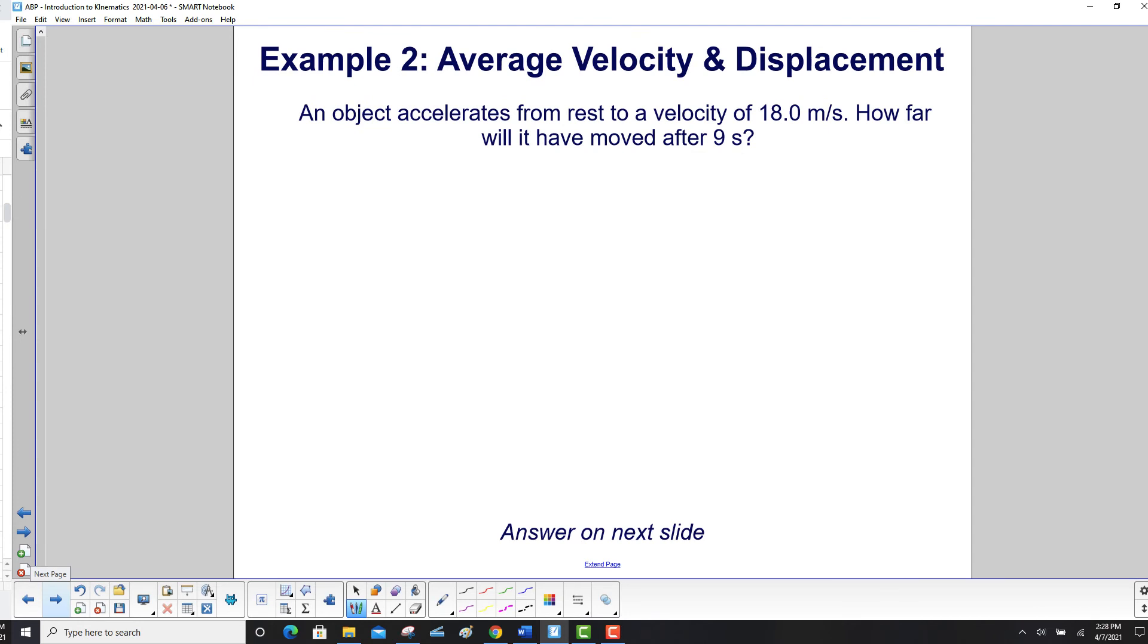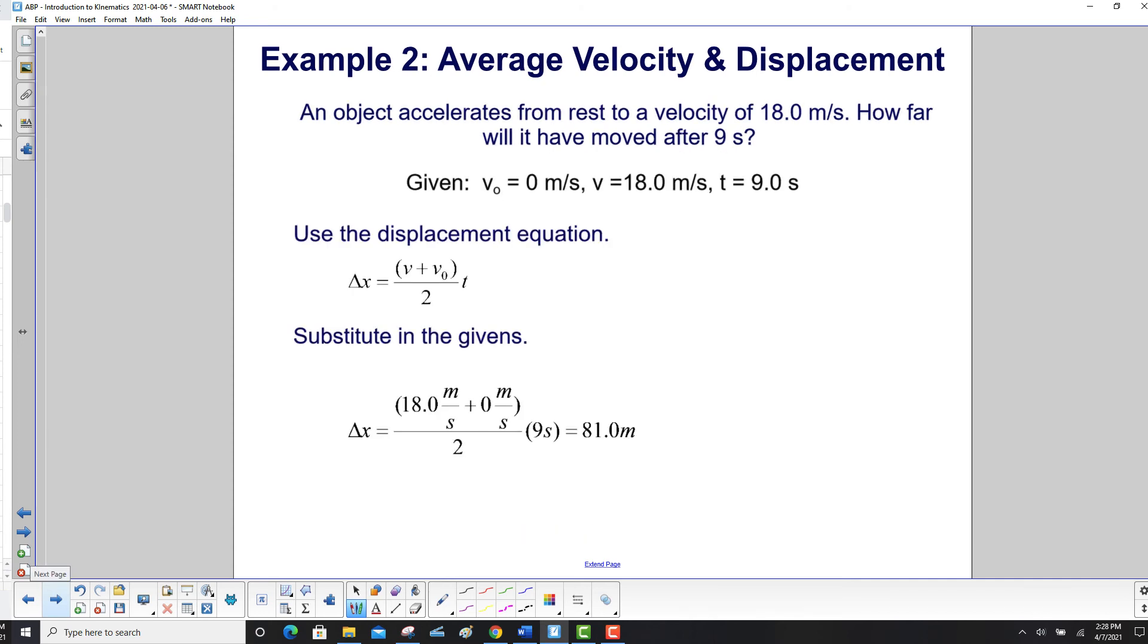An object accelerates from rest to a velocity of 18 meters per second. How far will it have moved after nine seconds? We start with our givens. And again, we started at rest. So that's code for v₀ is zero meters per second. We use our displacement equation right here.